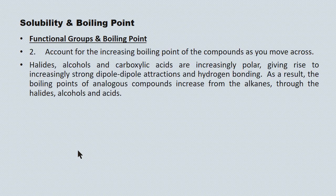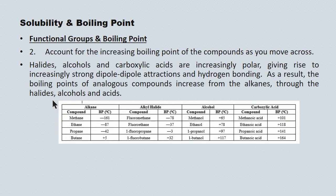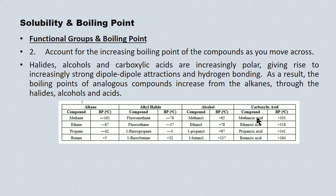Looking at functional groups and boiling points — reading across the table from methane to fluoromethane to methanol to methanoic acid — the number of carbons remains the same but the attachment changes. As we move from left to right, polarity increases. Alcohols and carboxylic acids are so polar they give rise to not only dipole-dipole attractions but also hydrogen bonding. As a result, boiling points skyrocket — methane boils at −161°C, while methanoic acid boils at 101°C.